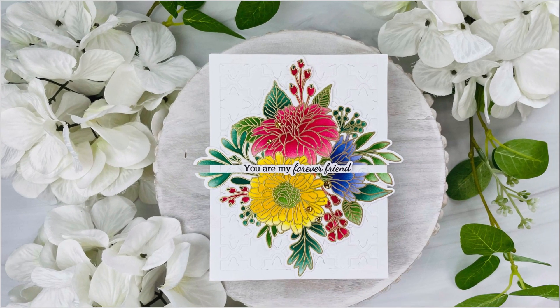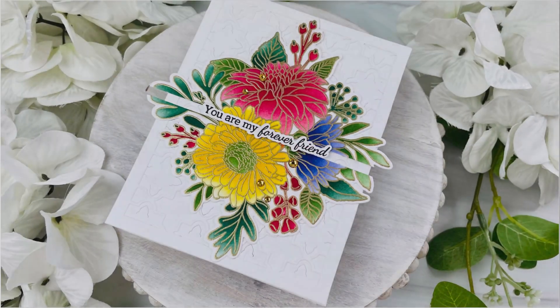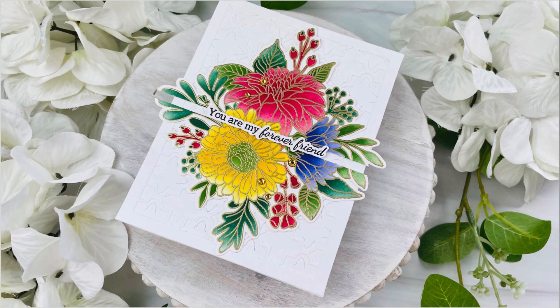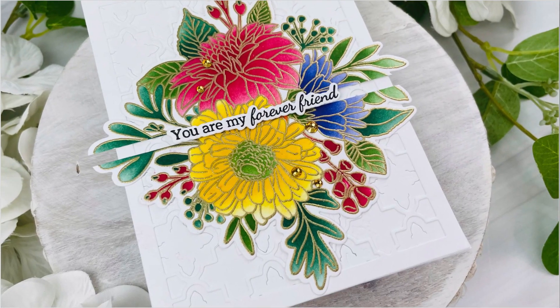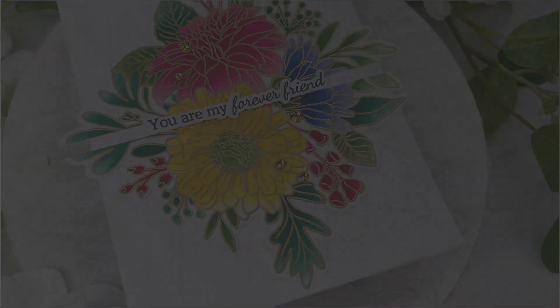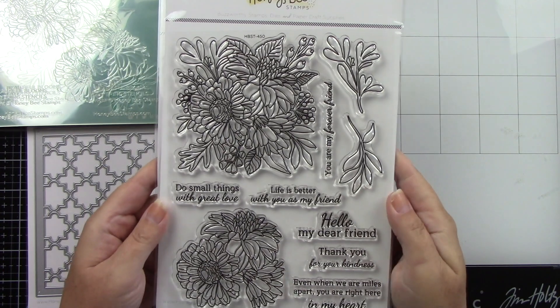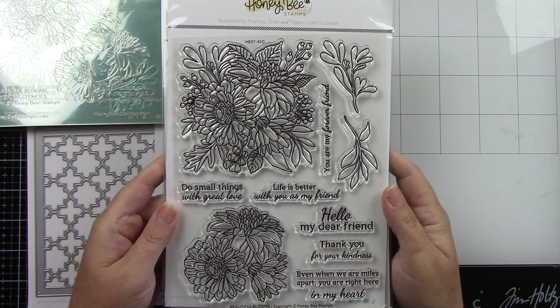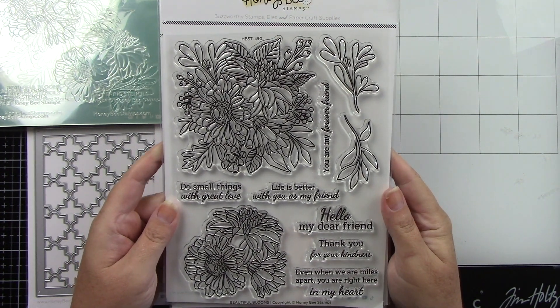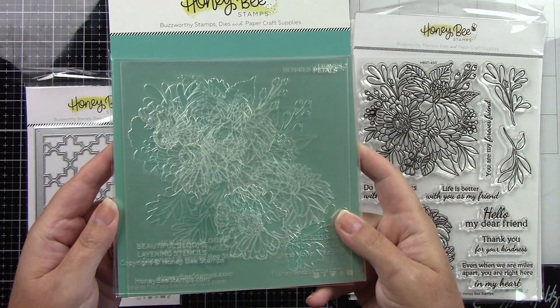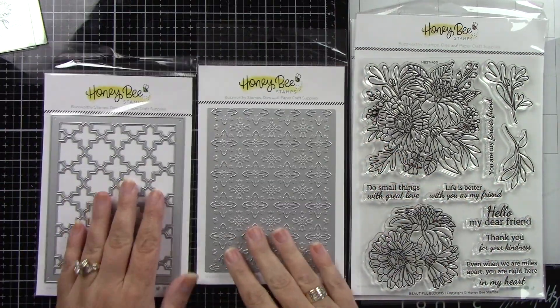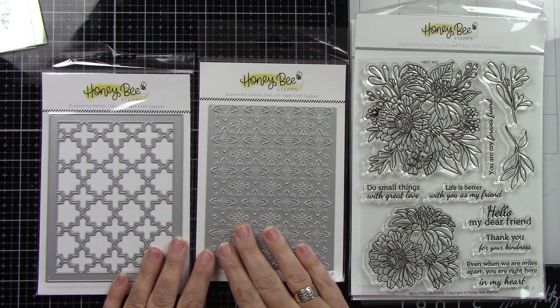Hey everyone, it's Joy here for Honeybee Stamps. Today I created a really beautiful fall color floral card using the Beautiful Blooms stamp and die along with the coordinating layering stencil. Here is that stamp set with great images and fantastic sentiments. Here is the layering stencil that goes with that. I'm also using the Ornate A2 Cover Plate Top and Base.